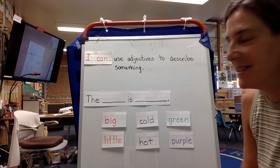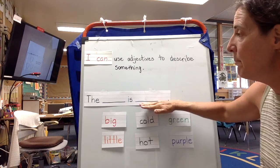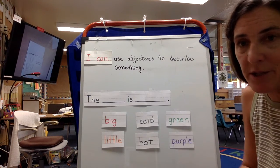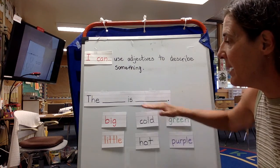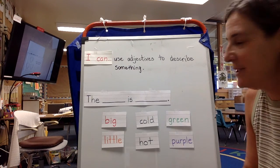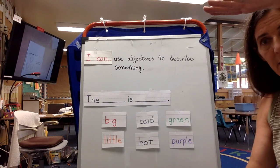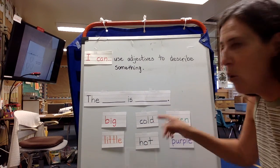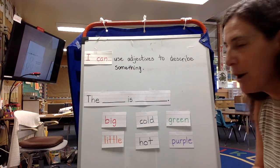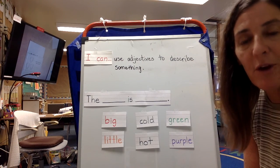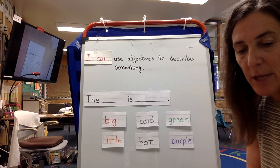Here's the beginning of a sentence: the blank is blank. I've got some pictures to put in right here, and then you'll use some words to describe it. Here are some ideas of words: big, little, cold, hot, green, purple. You might think of some of your own words as well — I'd love to hear that. So let me start with a picture.